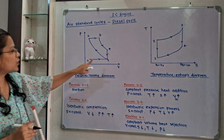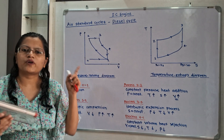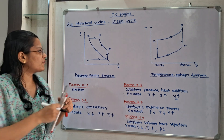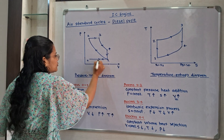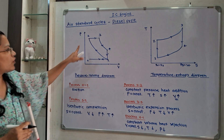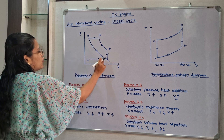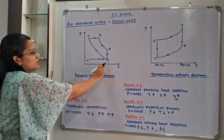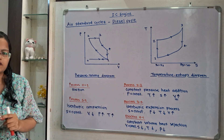Process 1 to 0 is the exhaust, which is opposite to the suction process 0 to 1. For calculation purposes, we consider only the cycle from points 1, 2, 3, 4 back to 1.